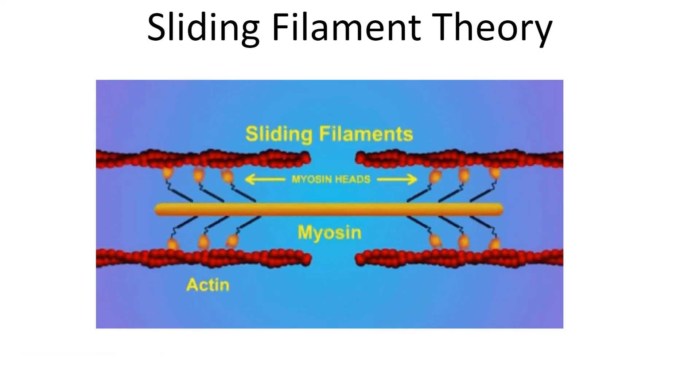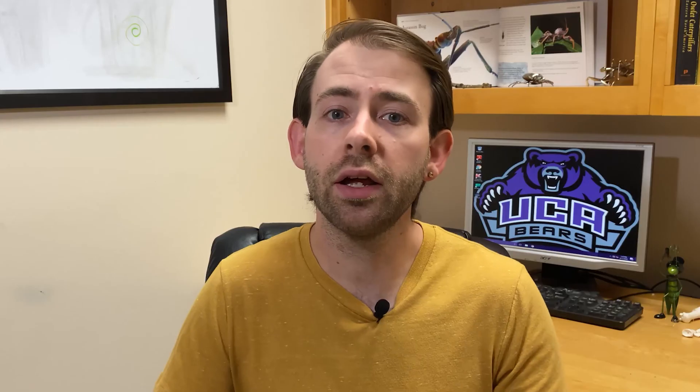ATP is then again used for energy to break the cross bridge, and that myosin head can be re-cocked to fire again. The entire process of sarcomere shortening in this way is called the sliding filament theory of muscle contraction. Two important things to note: the process requires ATP to move the myosin head and to break the cross bridge, meaning without ATP we cannot contract or relax muscle. Second, contraction can only occur if calcium is present to move the regulatory proteins.